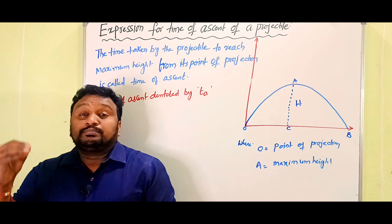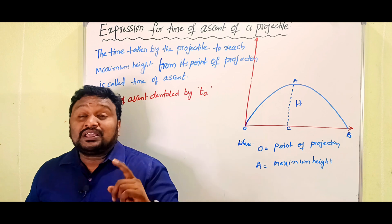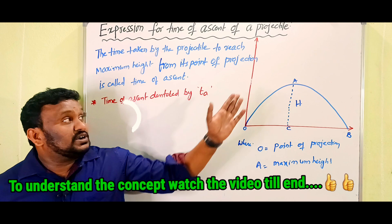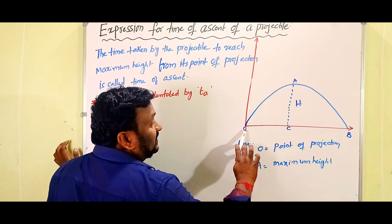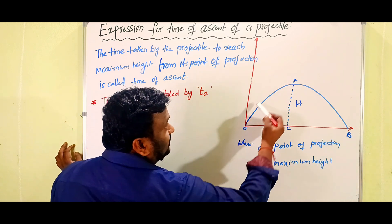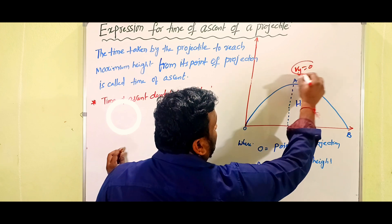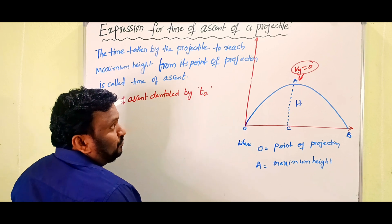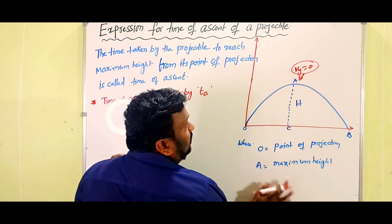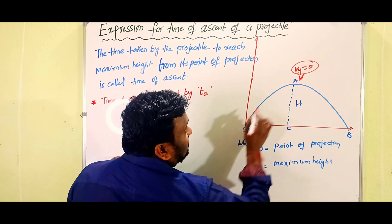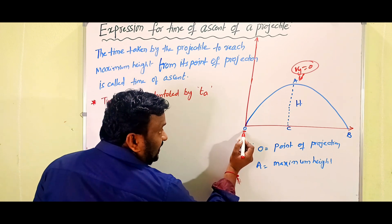In the case of a projectile, the motion should be along a parabolic path. We already proved that the trajectory of a projectile is a parabola. Here, O is the point of projection, A is the maximum height point — where the vertical velocity component becomes zero — and B is the final point where the projectile reaches the ground.